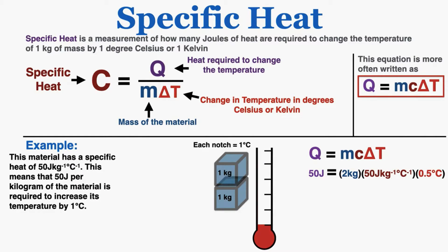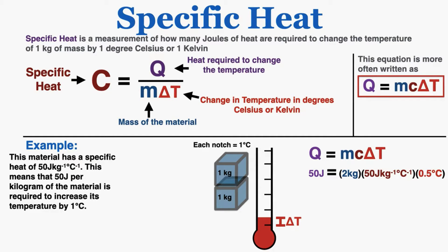Let's say that we had more of this material — suddenly we have 2 kilograms. The specific heat says that 50 joules are required to change the temperature of 1 kilogram by 1 degree, so now we're trying to change the temperature of twice that mass. So if 50 joules is enough to change 1 kilogram by 1 degree, it's only going to be enough to change 2 kilograms by half a degree. That energy is kind of evenly distributed to both, so each individual 1 kilogram only gets 25 joules, which is only enough to change the temperature by half a degree.